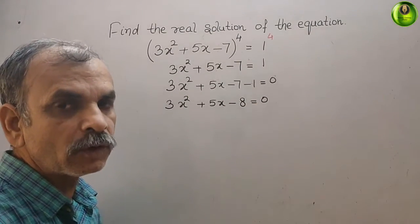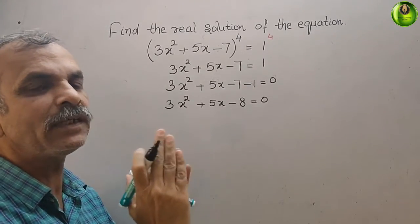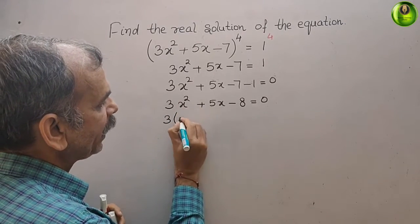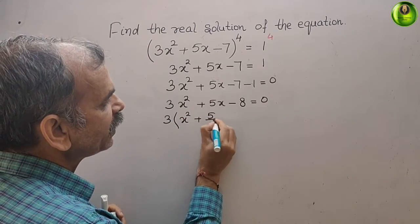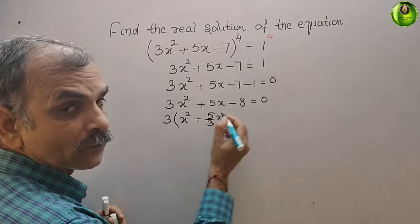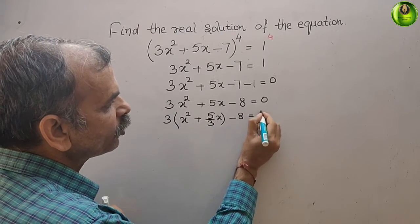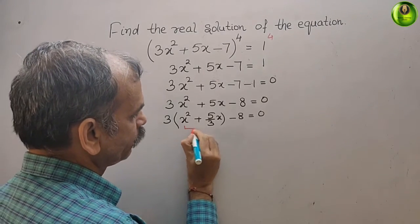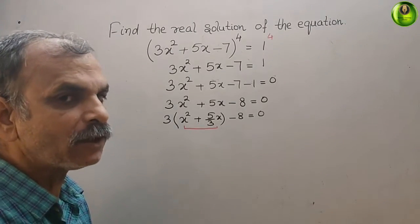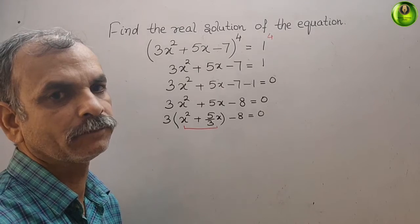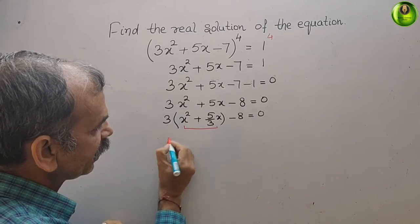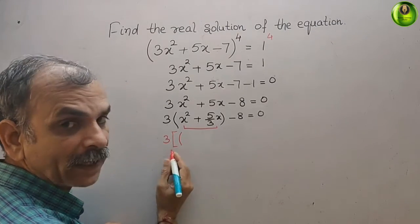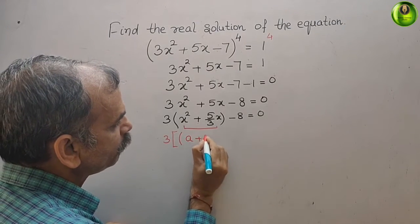Now, what we have to do next: you can see 3 is there, so we will take 3 as common. It will come as 3(x² + 5/3·x - 8/3) = 0. Now, since the sign is positive, we will make it a plus b whole square form.